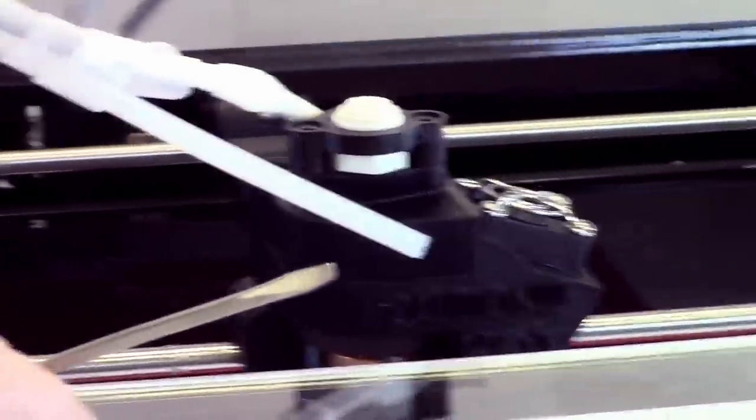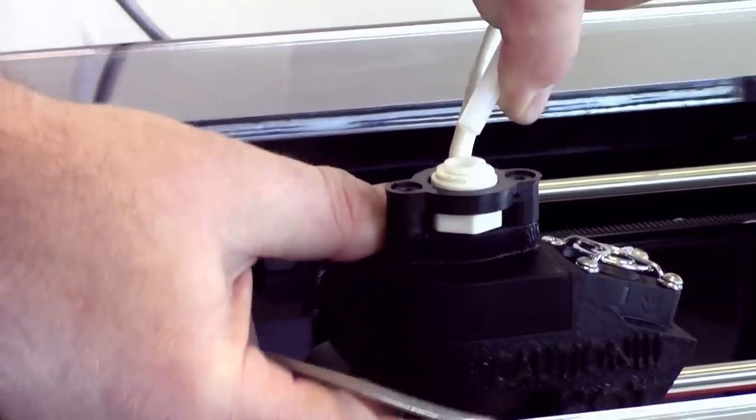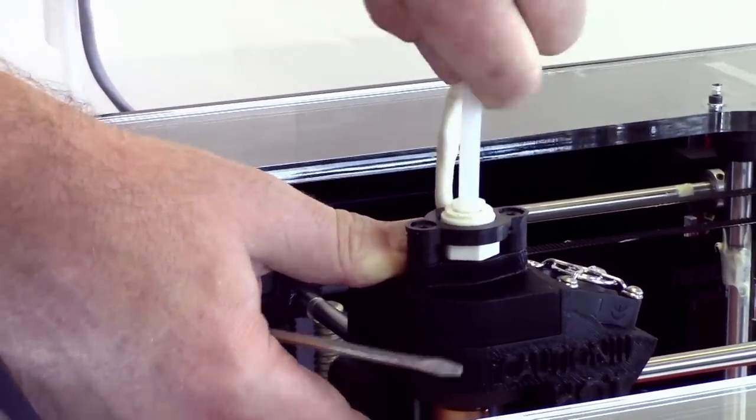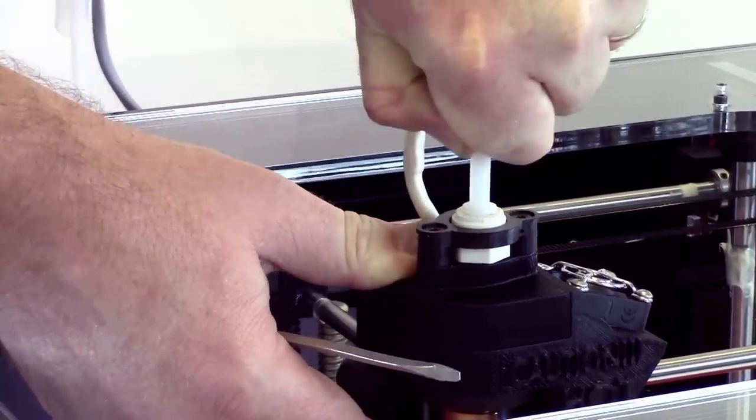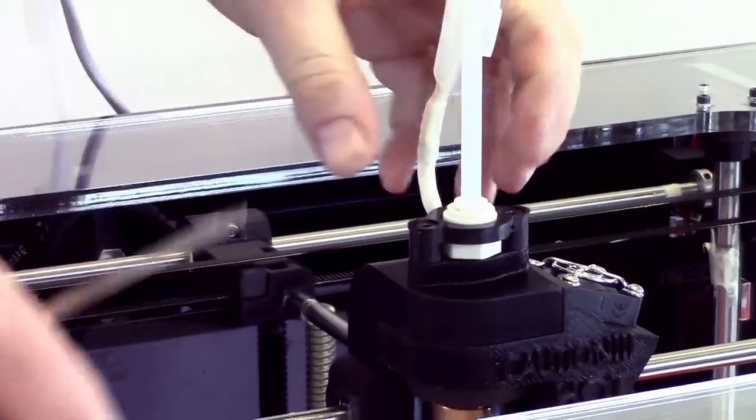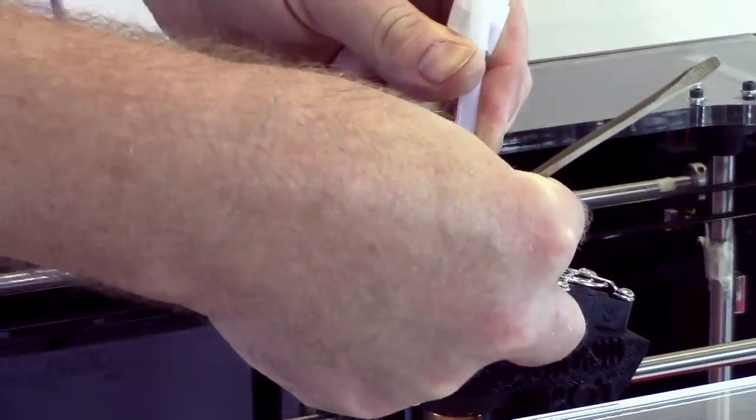Now locate the other end of the tube. This will be inserted into the fitting inside the extruder head. Make sure to push all the way down until it stops while lifting up on the extruder. This will ensure that it's set correctly.